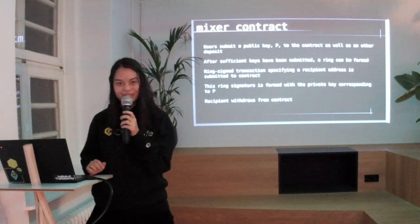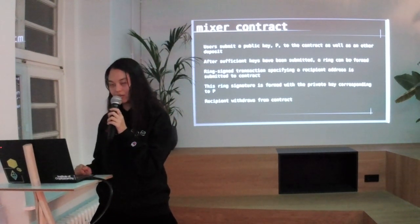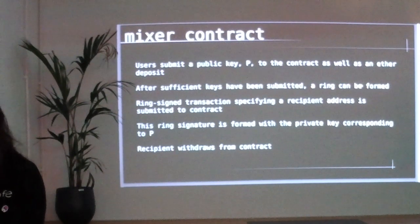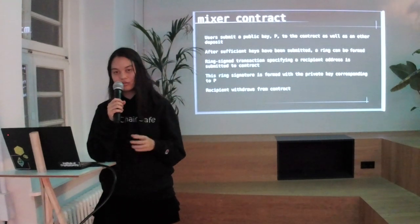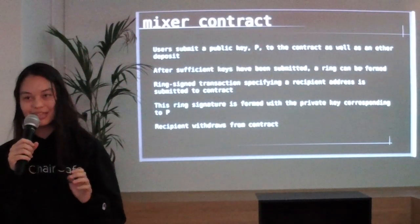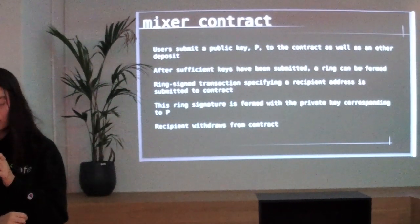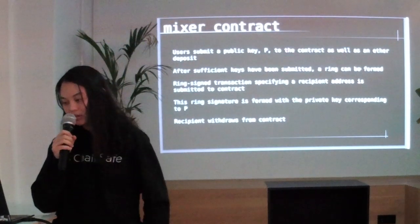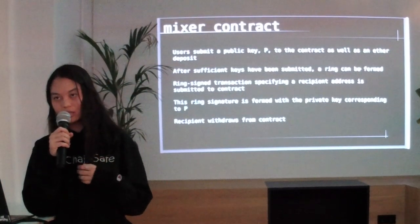Once we have that, we can implement a mixing contract using these primitives. I have rough code for this right now, but it hasn't been tested. The rough idea is that a user would submit a public key to the contract as well as a deposit. The deposit is a fixed amount of ether, and there's a fixed ring size — currently probably set to 11 or 12, similar to what Monero uses. After that number of people has submitted a public key and deposit, we pull that list of public keys from the contract and create a ring signature from it. The initial public key submitted could be one where the receiver of the transaction holds the corresponding private key.